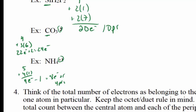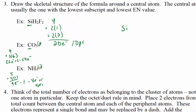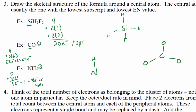So now that I have how many electrons I'm working with, the next step is to pick our central atom. I'm going to draw Si in the center, and a carbon, and a nitrogen in the center. It doesn't really matter how you arrange these — you just need to arrange the peripheral atoms around the central atom. For carbon I'll arrange the oxygens around it, and for nitrogen we have four hydrogens.